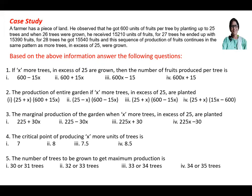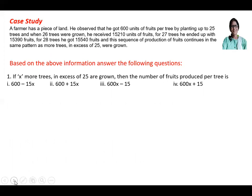So we'll go one by one. You can pause the video, write the answers yourself, and take time to read the questions very carefully. Now for question number one: if x is the number of more trees in excess of 25 grown, then the number of fruits produced per tree is 600 minus 15x, 600 plus 15x, 600x minus 15, or 600 plus 15.